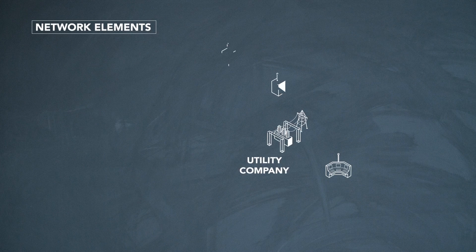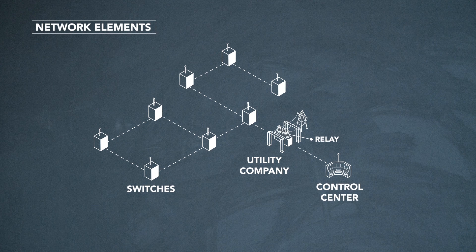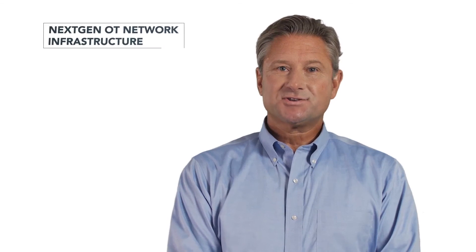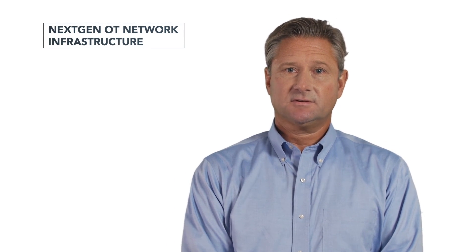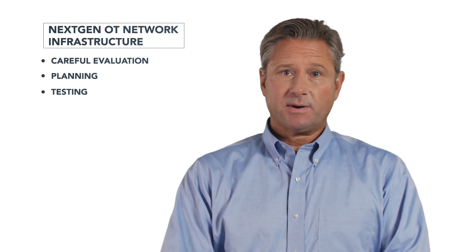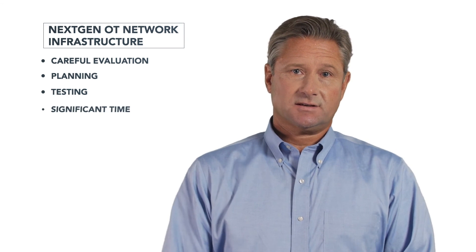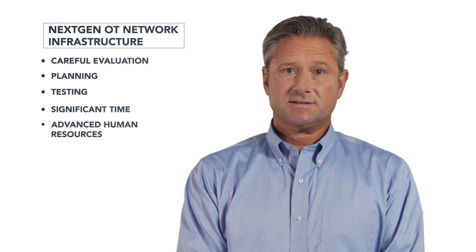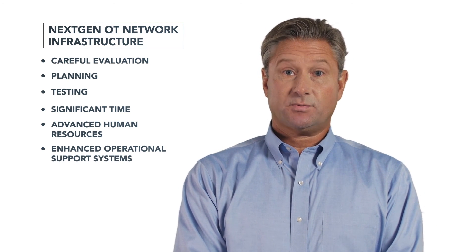Utilities have made a significant investment in their OT, or operational technology, network elements. These network elements include the switches, relays, and control mechanisms that run the electrical grid. The next-gen OT network infrastructure considered by a utility often takes careful evaluation, planning, testing, and potentially a pilot site before it's rolled out. This takes a significant amount of time, advanced human resources, and improved and enhanced operational support systems.